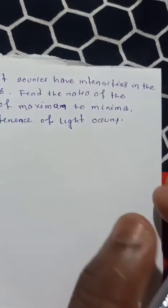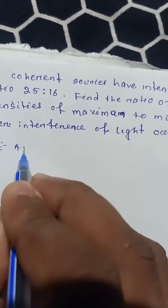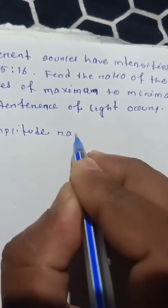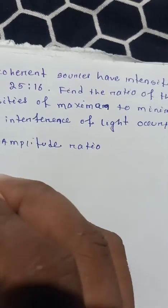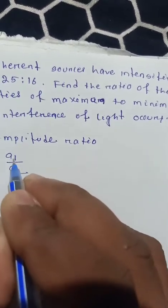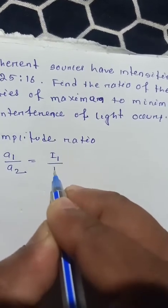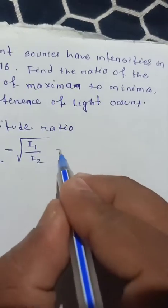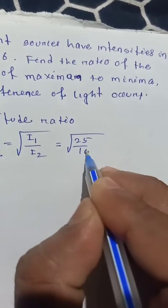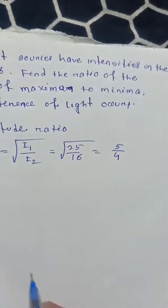First, we use the amplitude ratio formula. The amplitude ratio r equals a1 by a2, which equals the square root of the intensity ratio. Since the intensity ratio is 25 to 16, the amplitude ratio r equals the square root of 25 by 16, which is 5 by 4.